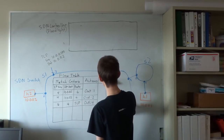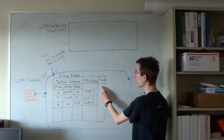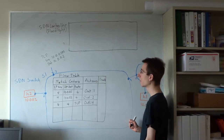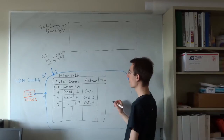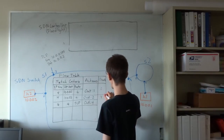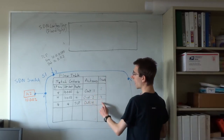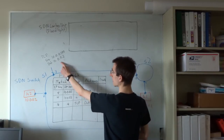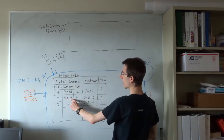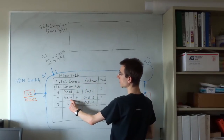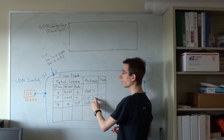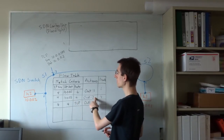Every entry in the table also has a priority field, where a higher number means a higher priority. So, if we install rules with a priority of 2 for our first two rules and a priority of 1 for our last rule, that means that this particular packet will match both rules, but the second rule has a higher priority, and so we'll end up sending this packet out port 2.